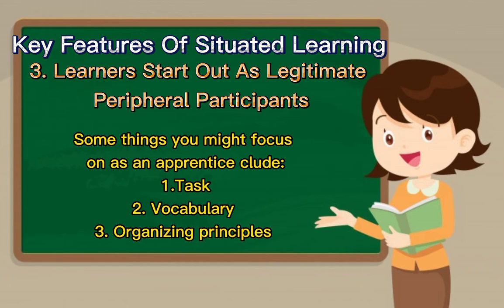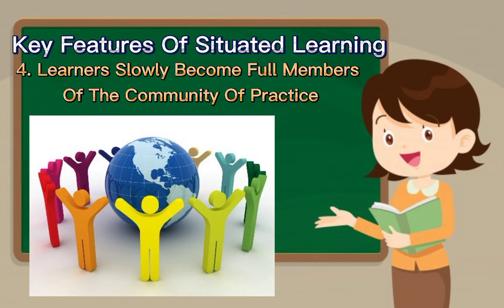We sometimes call the specific ways of speaking of the community of practice a discourse community. Number three, organizing principles, which involve rules and policies, strategy, and structure. Number four, learners slowly become full members of the community of practice. Each community of practice has its own rules or structures for progressing from peripheral to full participation.